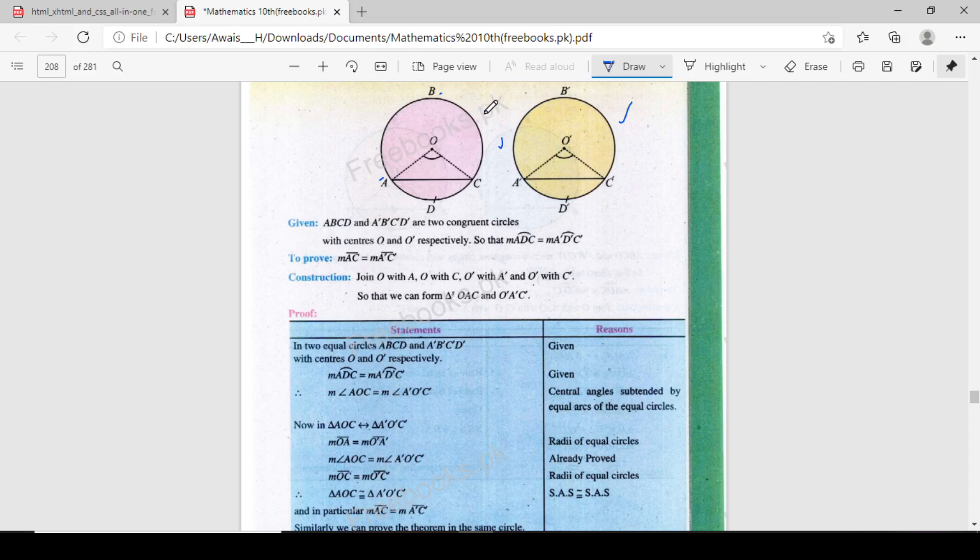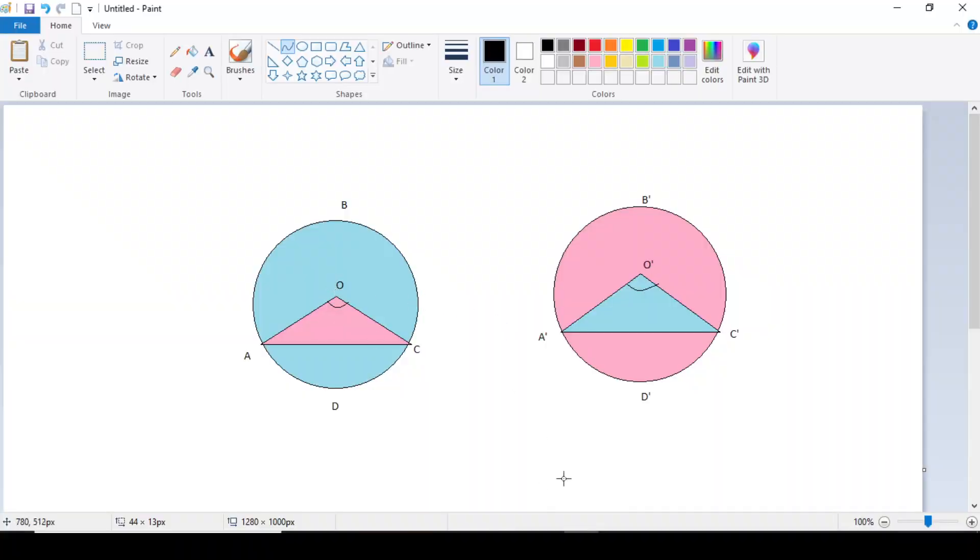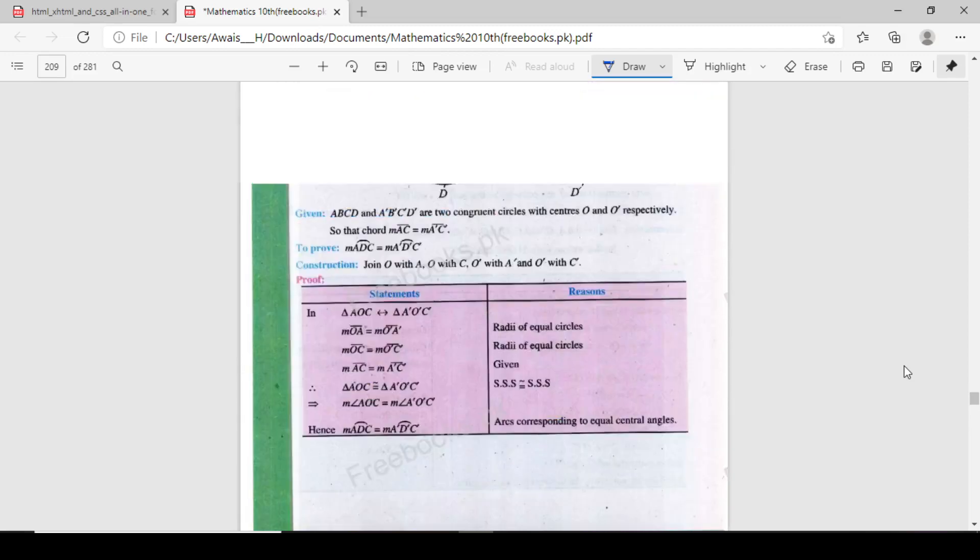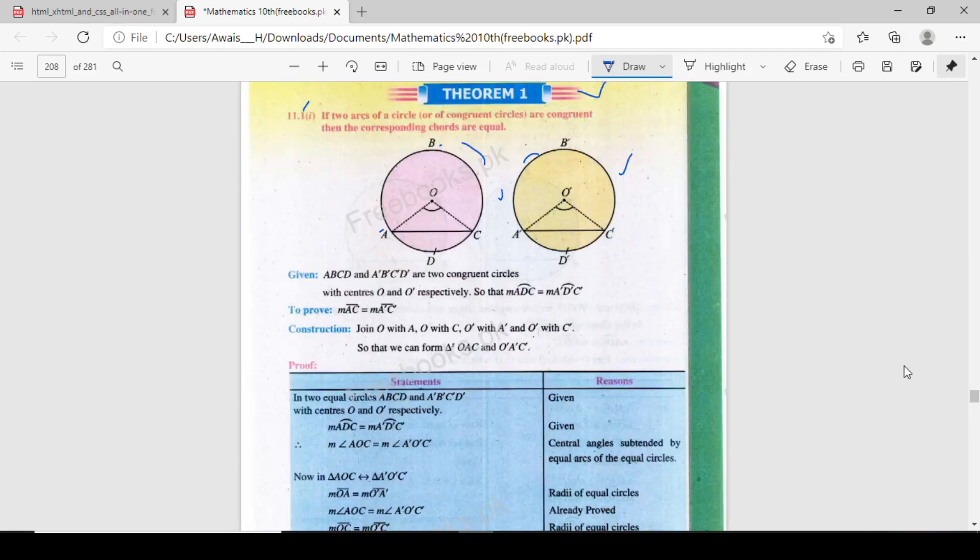Construction: join O with A, join O with C. Join O' to A', join O' with C' so that we can form triangle OAC and O'A'C'.